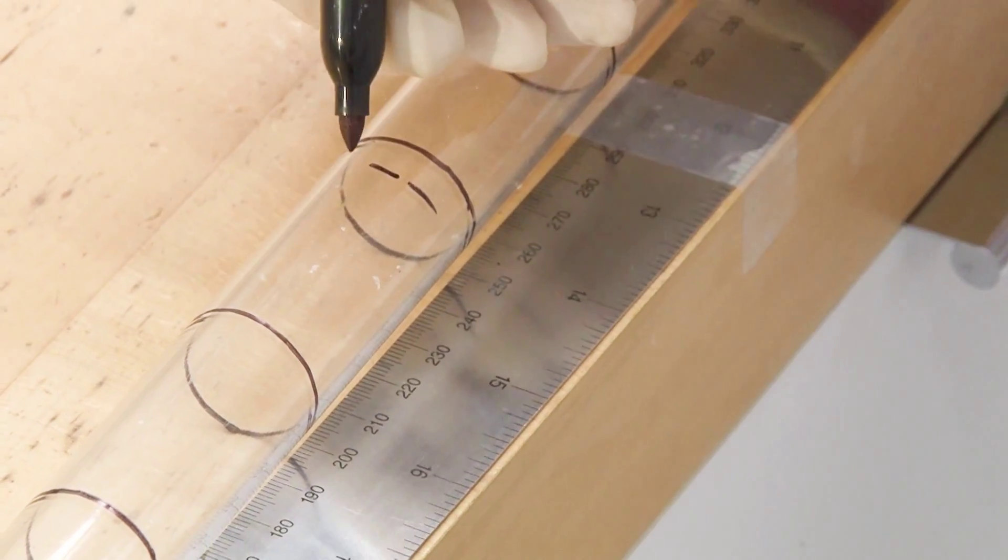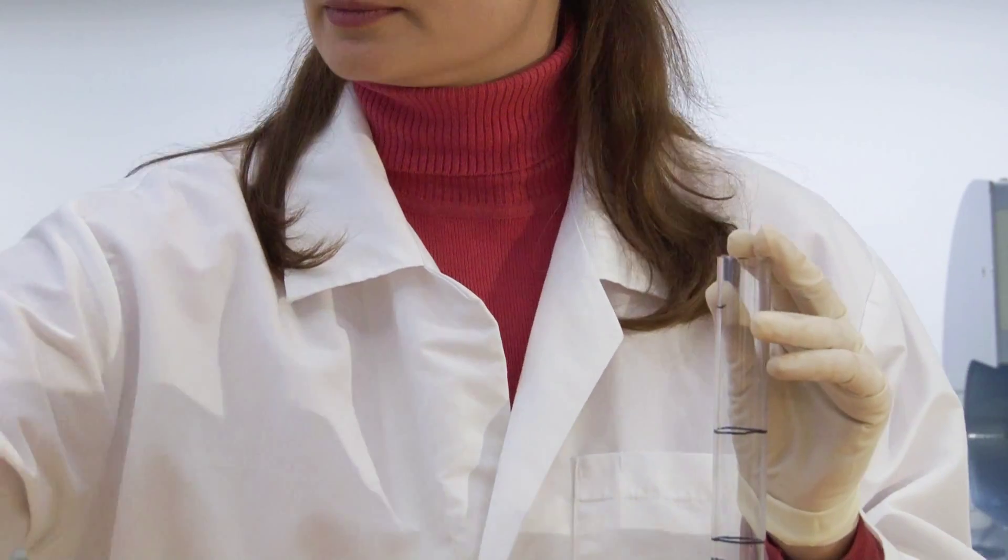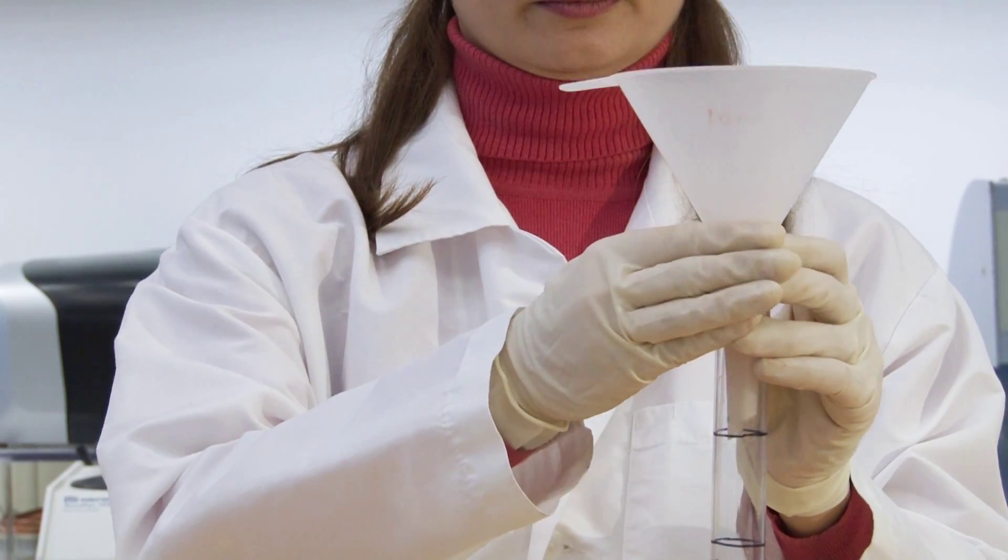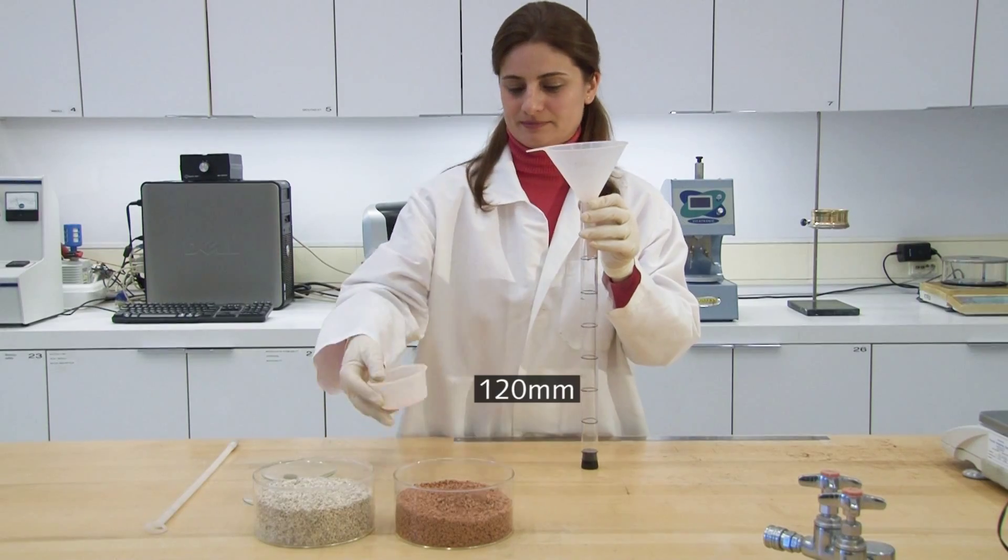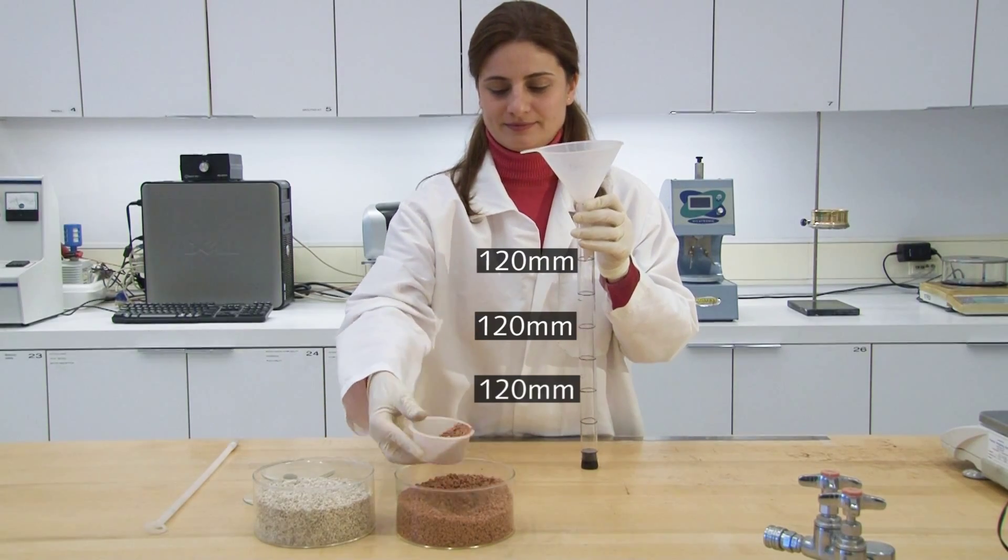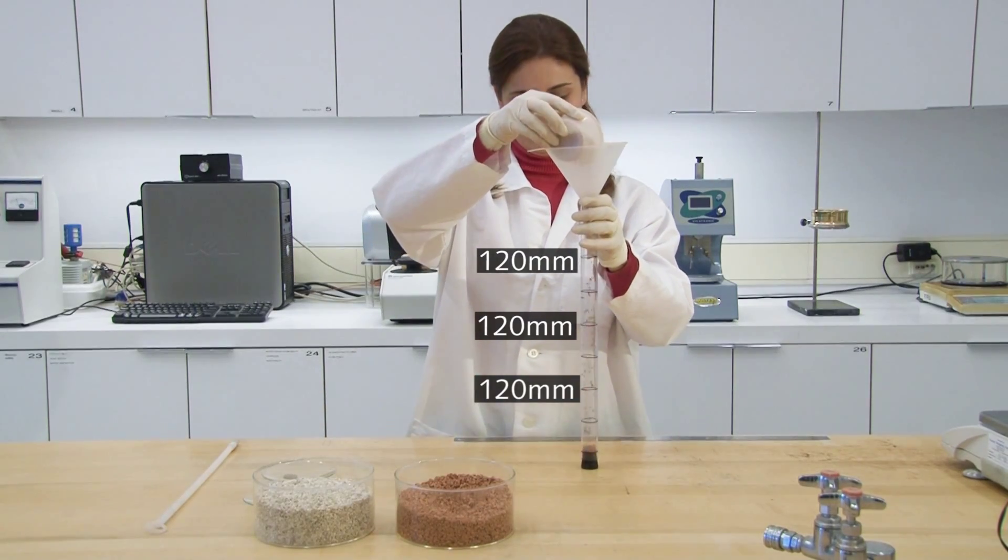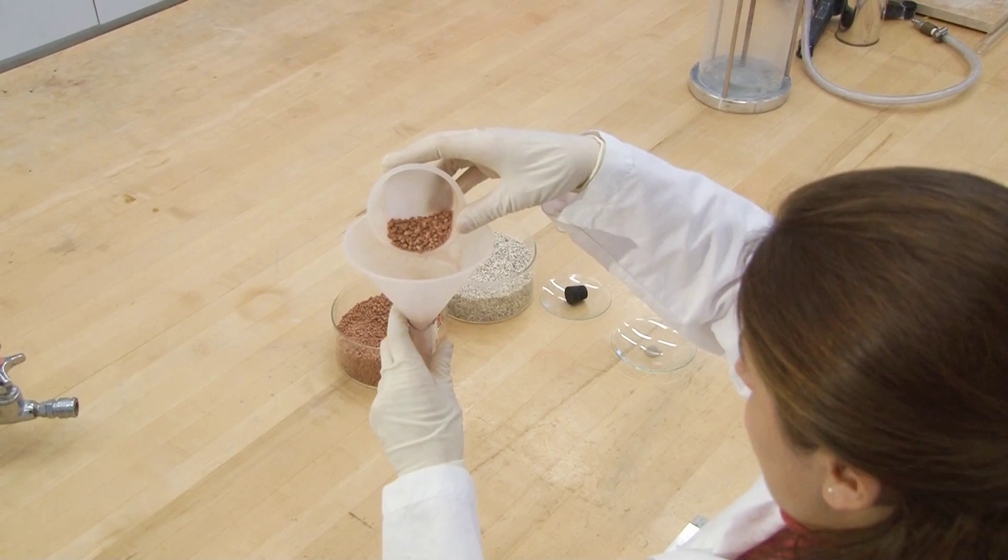Mark the column with broken lines to indicate three equal filling sections of 120 millimeter each. Fill the column with crushed brick or crushed travertine in approximately three equal layers of 120 millimeter in height to compact granular material evenly.